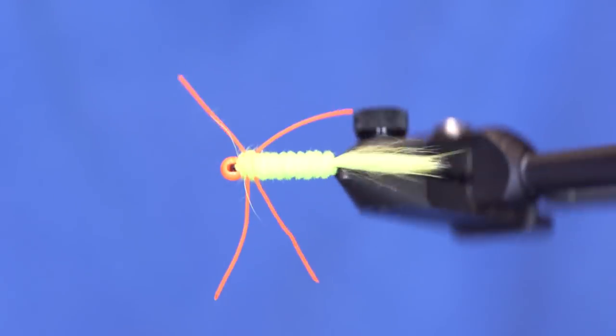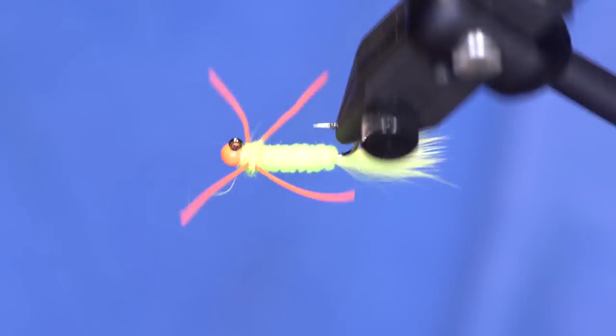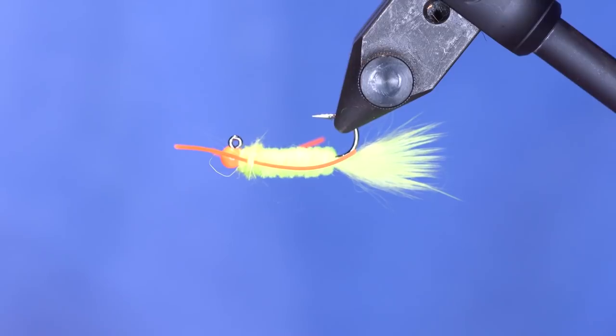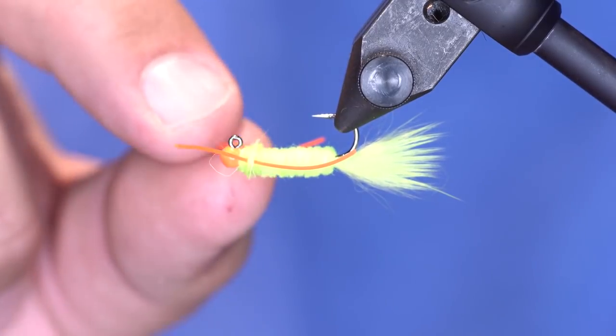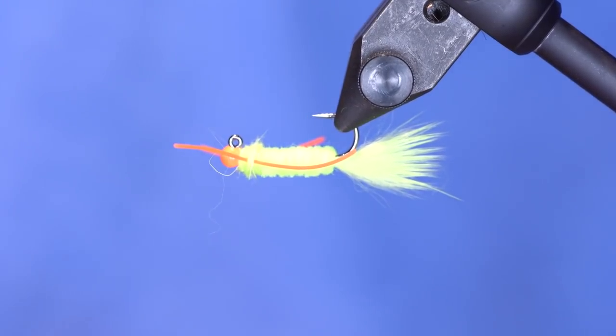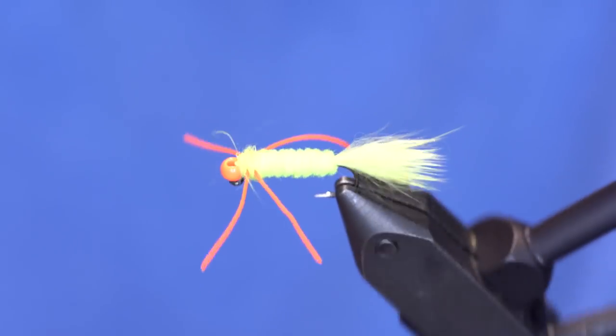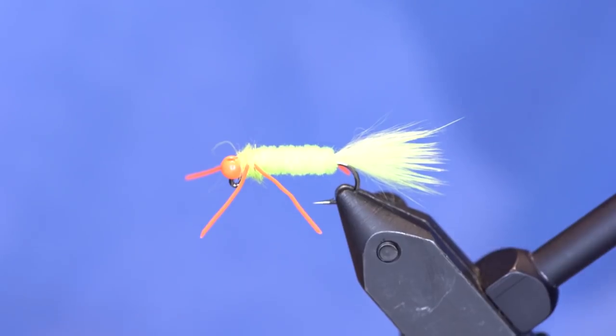There we have our bluegill jig. And as you can imagine, you can tie this in infinity different colors. Try one with all black and a chartreuse bead and chartreuse legs. But anyway, this is an absolute bluegill killer. Tie them up and rip some lips.